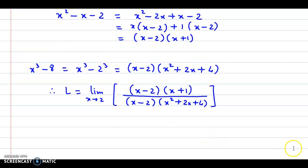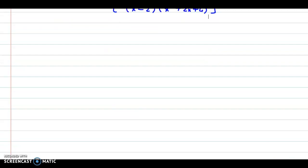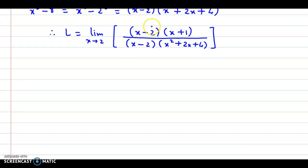We could cancel the factor x minus 2 both in the numerator and the denominator. We cancel out these two factors here. The reason being x is approaching 2, so x minus 2 is not equal to 0.